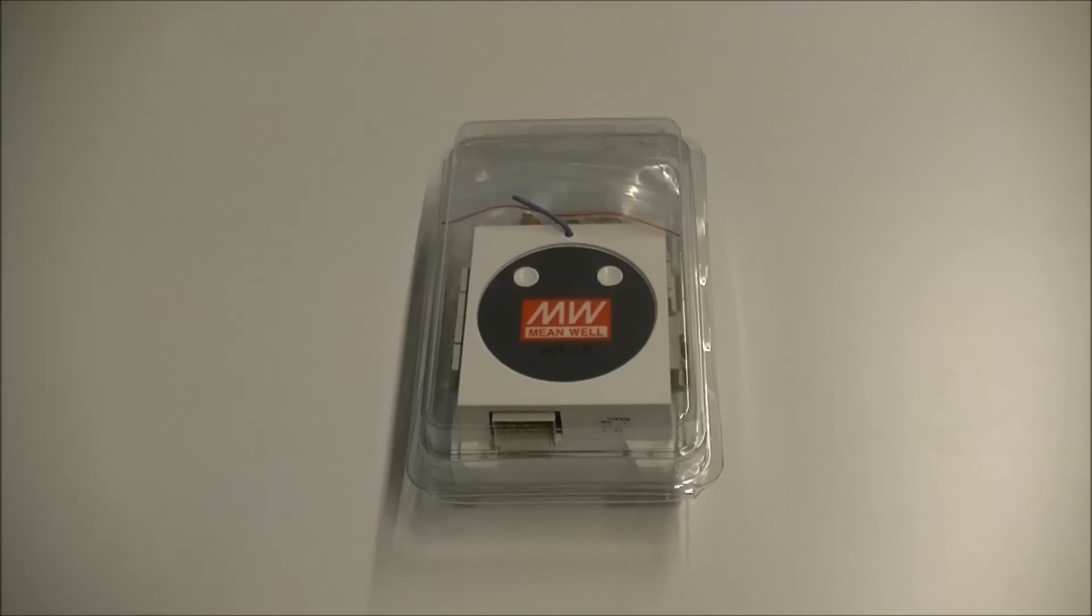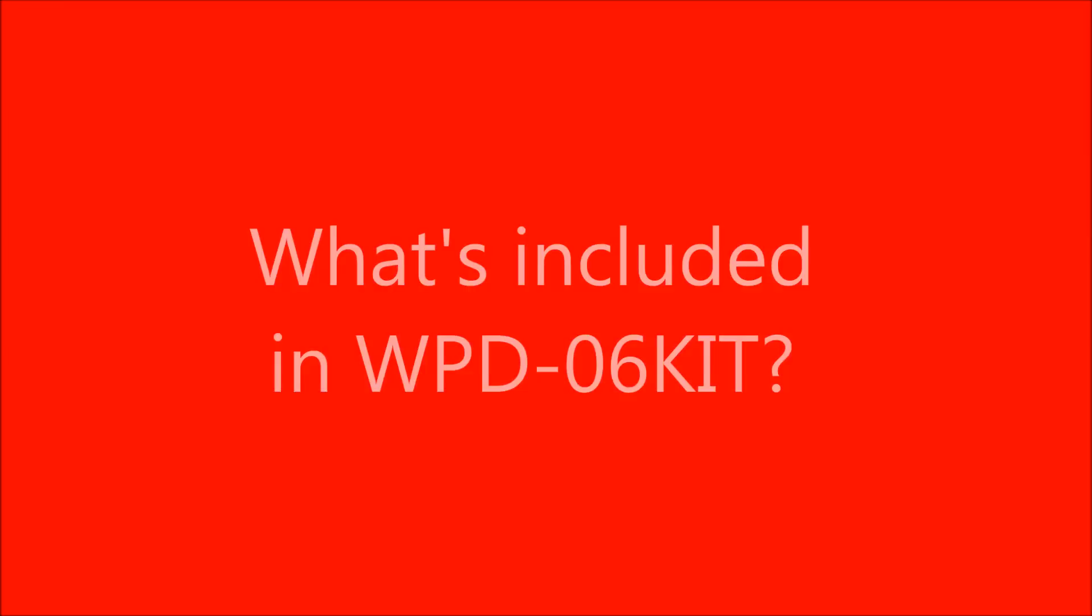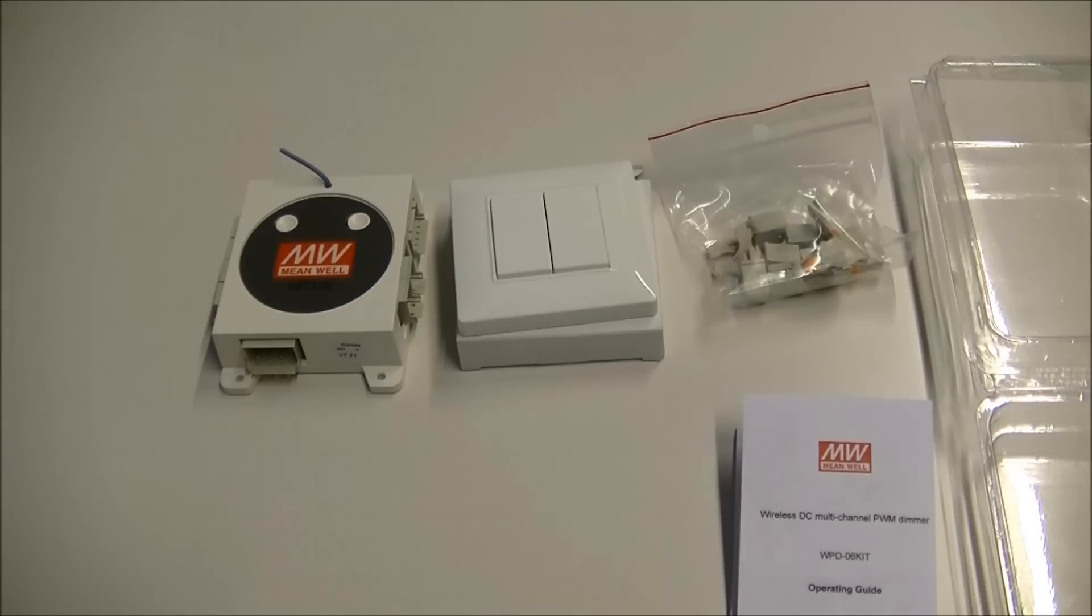Welcome to this tutorial. This video is to show you how to make WPD-06 work. The kit includes one WPD-06 dimmer, one in-ocean wireless battery-less two-key switch, one set of WAGO plug, and one copy of operating guide.